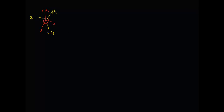This first one will be called staggered, and it's actually a specific type of staggered conformation called anti, since these two methyl groups are anti to each other — kind of on opposite ends.